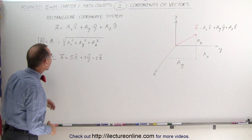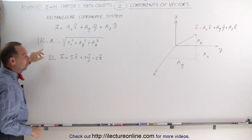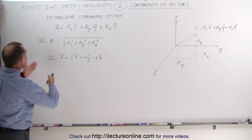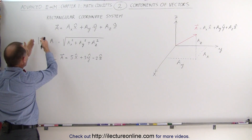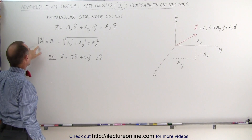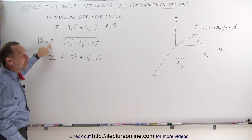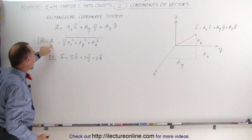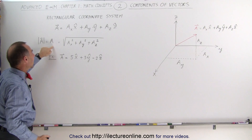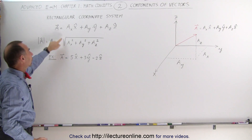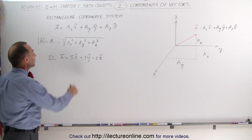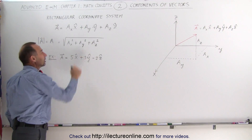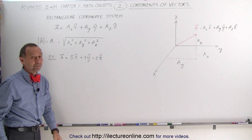If you want to calculate the magnitude of the vector, one way to indicate the magnitude is to draw absolute value signs around it, or write the letter without the arrow on top. That means the magnitude of vector a, and it's the square root of the x component squared plus the y component squared plus the z component squared.